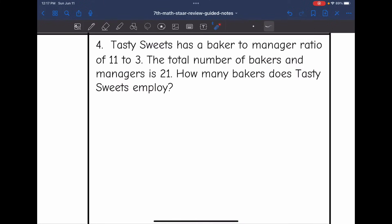Let's look at number four. It says Tasty Sweets has a baker to manager ratio of 11 to three. The total number of bakers and managers is 21. How many bakers does Tasty Sweets employ? So we are talking about the number of bakers that Tasty Sweets has, and they have 21 bakers and managers total. So I want to do a ratio with the bakers out of the total, since that's what I'm working off of and trying to find.